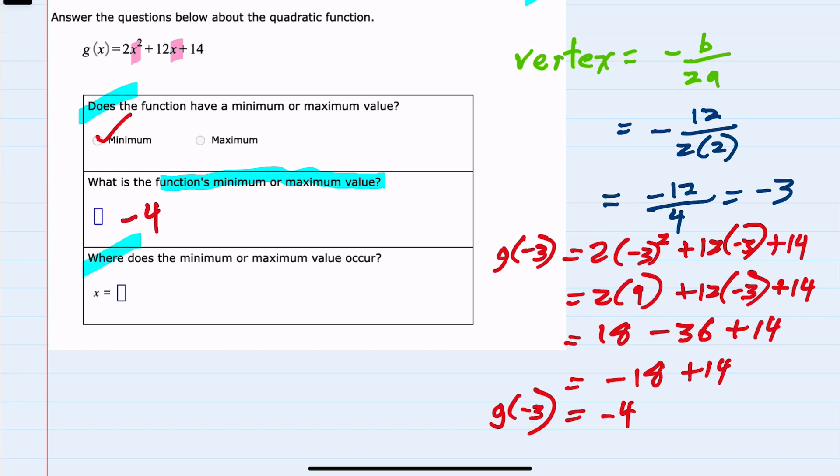Where does the function's minimum or maximum value occur? It would be at the coordinates for that vertex. And we've already found that it has the x value of negative 3, and when we plug that into the function we got a y value of negative 4. So the minimum in this case occurs at (−3, −4).